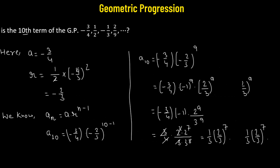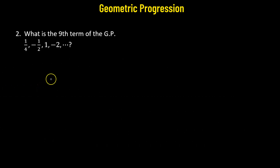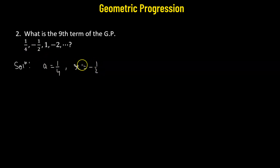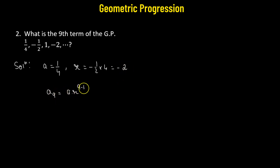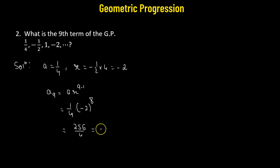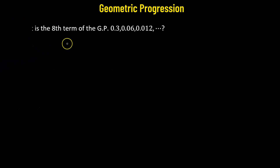Moving on to problem number two, we need to obtain the ninth term of the geometric progression. The first term is 1 over 4; the common ratio is negative 1/2 divided by 1/4, which gives negative 2. The ninth term, a_9, equals a times r raised to the power of 8, which is 1 quarter multiplied by negative 2 raised to the power of 8. That's 256 divided by 4, giving us 64 — the ninth term of the geometric progression.